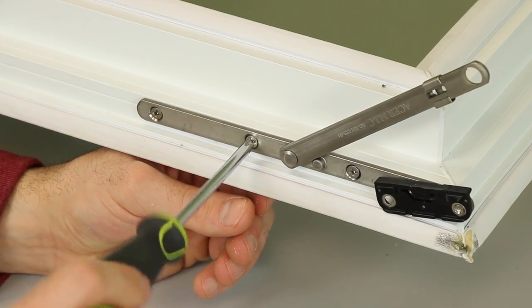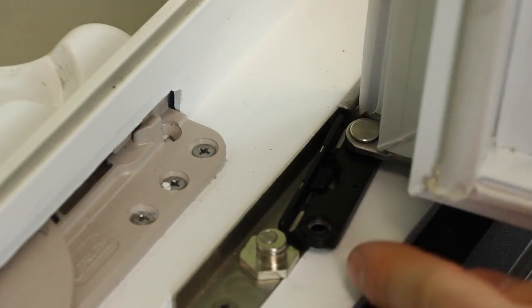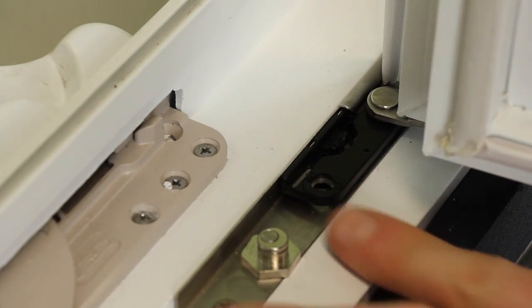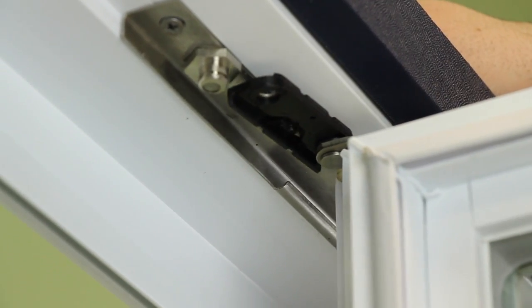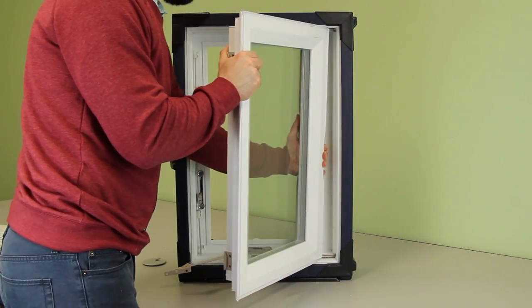After you've replaced both your top and bottom hinge sets, it is now time to put your window sash back into the window frame. Align the sliding shoes with the cutouts in the hinge tracks, and slide your sash over until you can connect your hinge arms to the tracks.